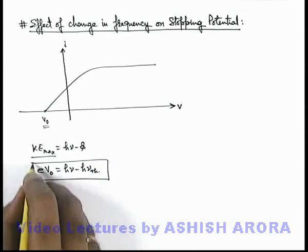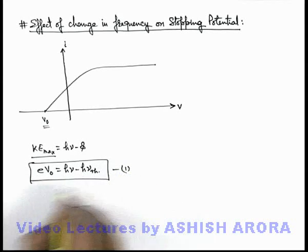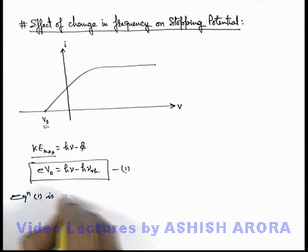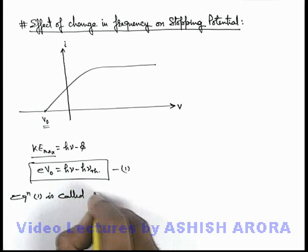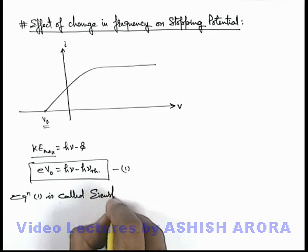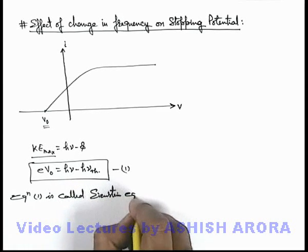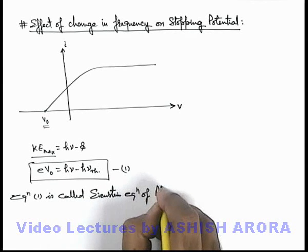This is an equation which we can term as equation 1, and we can write this equation 1 is called Einstein equation of photoelectric effect.